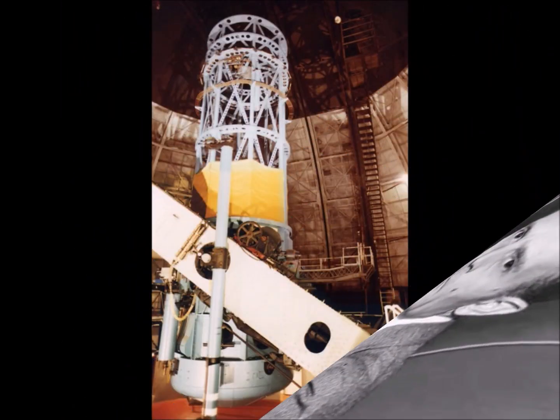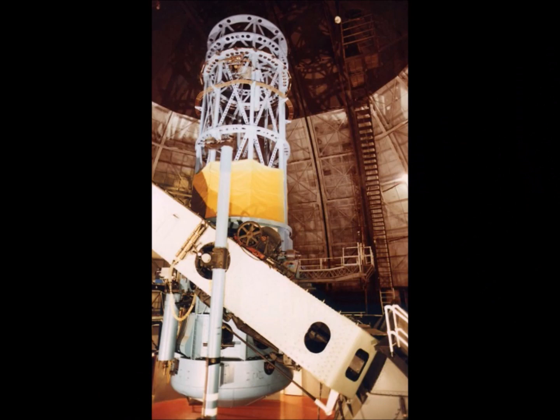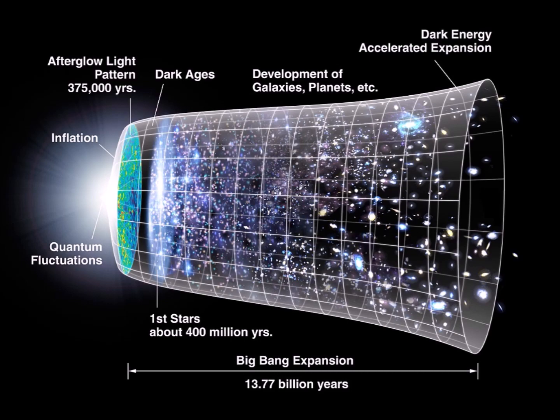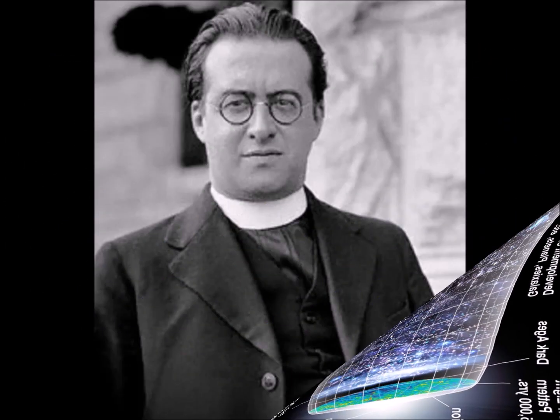In 1929, astronomer Edwin Hubble attributed the redshift of light emitted by galaxies according to their distance to a Doppler-Fizeau effect. This interpretation was in line with the expansion of the universe discovered by Georges Lemaître as a consequence of the general relativity theory.